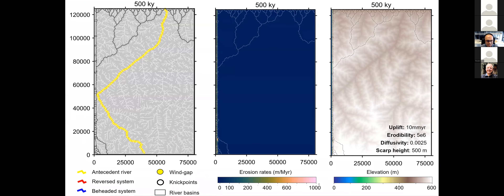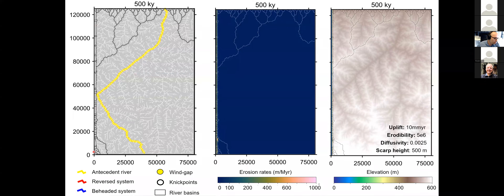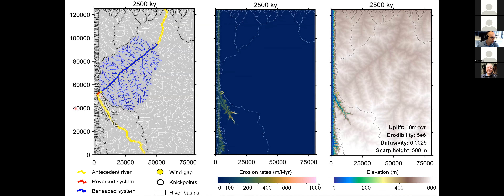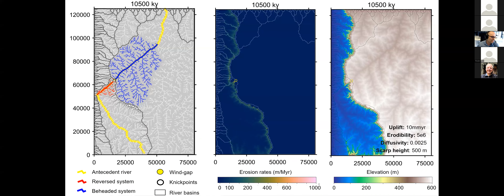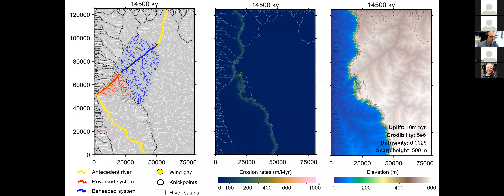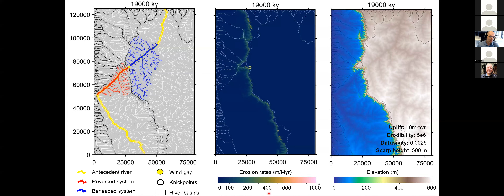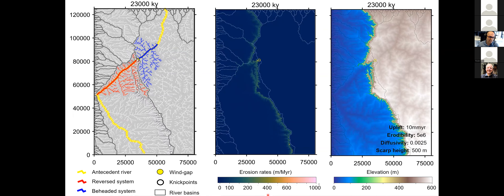In this synthetic model run, I have the antecedent river stream marked, and I create a north-south escarpment that moves to the right. At the point of capture, the wind gap is marked as the yellow point. We then see the wind gap moving, conquering tributaries to the beheaded reach and growing. At each capture, there is a base level fall event and the wind gap races ahead of the other drainage divides.